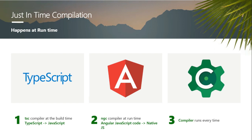When the browser receives all the files, it uses the Angular compiler to compile the Angular JavaScript code into native JavaScript code. For example, classes in TypeScript or Angular JavaScript get converted into a prototype-style native JavaScript. Because we are shipping both the Angular libraries and the Angular compiler, our package will be a little bigger than expected. The compiler also runs every time — so if you hit F5 to refresh the page, the compiler will run again from the beginning. This repeated compilation is where we lag in performance.